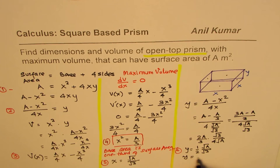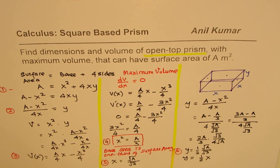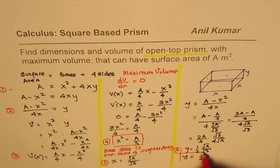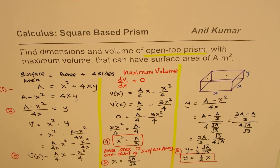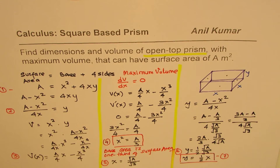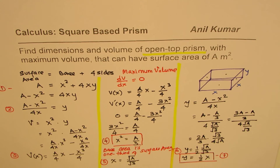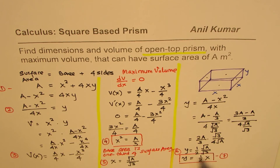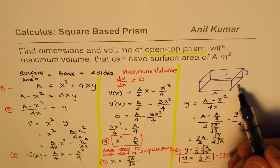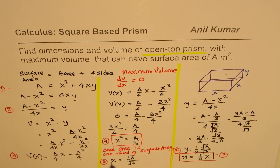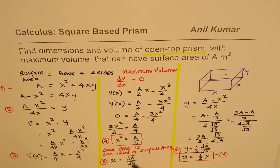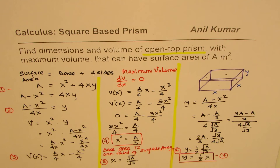Comparing X and Y: X = √(A/3) and Y = (1/2)·√(A/3), so Y is half of X. This is a very important conclusion for the open-top prism: the height is half the side length of the base. This condition appears in many exam questions and multiple-choice problems, so it's worth memorizing.